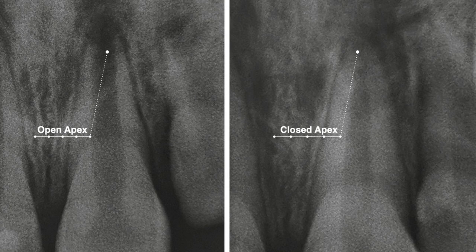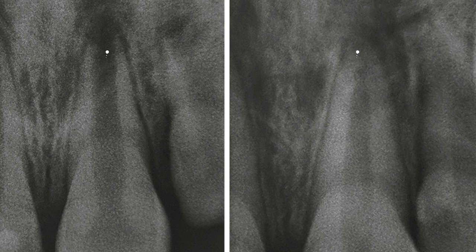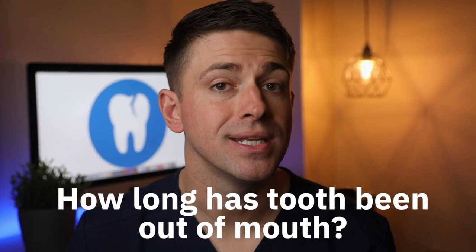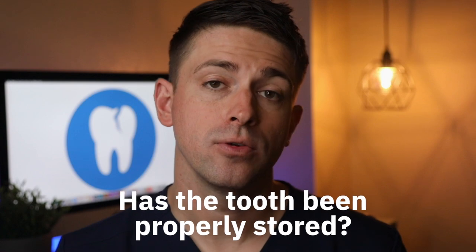Now let's look at the actual treatment once the patient arrives at the dental office. Treatment is based first on open apex versus closed apex. If the tooth has already been re-implanted prior to the patient arriving, a radiograph will confirm an open or closed apex. Once you've identified the apex status, determine if the tooth was re-implanted prior to arrival and, if not, how long it has been out of the mouth — and whether it was stored in a suitable storage medium during that time.